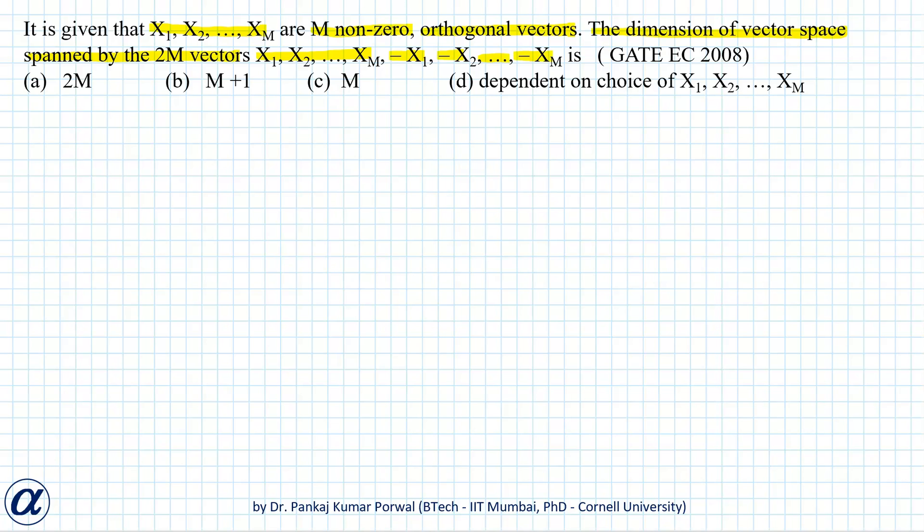As we know, the dimension of a vector space spanned by vectors is the smallest number of linearly independent vectors that span our vector space. Here the linearly independent vectors are x1, x2, ..., xm, and they are linearly independent because we are given that they are orthogonal, and orthogonality of vectors implies linear independence.